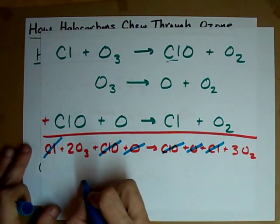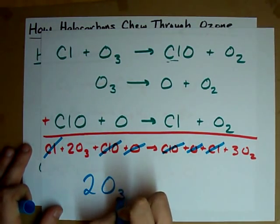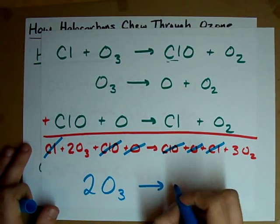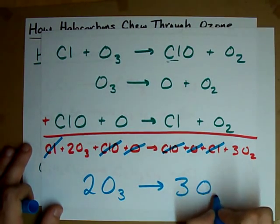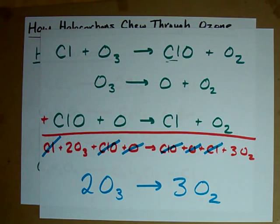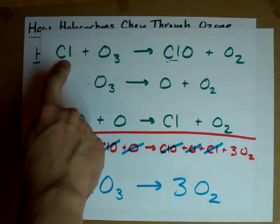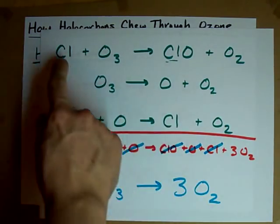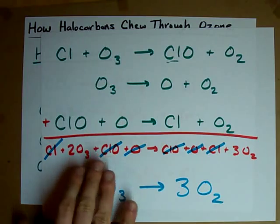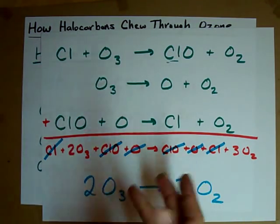In the end, what is the total reaction that's happening here? Two ozone molecules destroyed, three oxygen molecules created. This overall reaction just takes ozone and destroys it. And what causes it? The fact that a chlorine was there to chew it up and regenerate itself, over and over and over again.